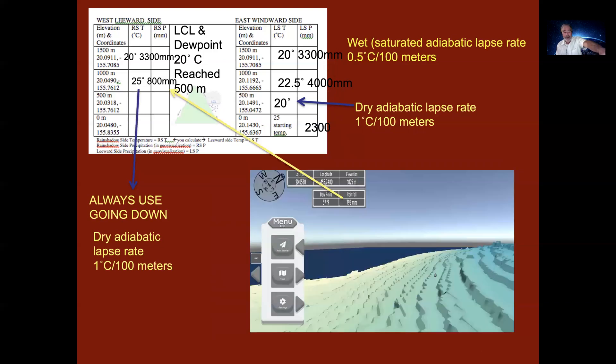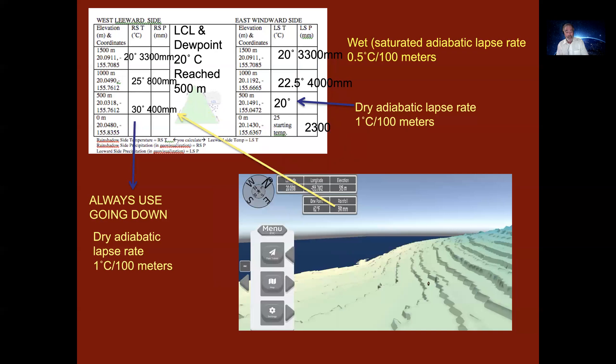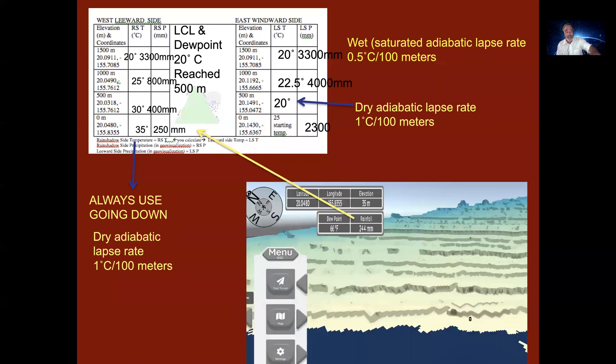We're going to drop down 500 meters and it warms 5 degrees. And it's a drastic drop in precipitation. You drop down another 500 meters and there's a drastic drop in precipitation. And you drop down another 500 meters and there's an even greater drop in precipitation. Going down, you always use the dry adiabatic lapse rate.